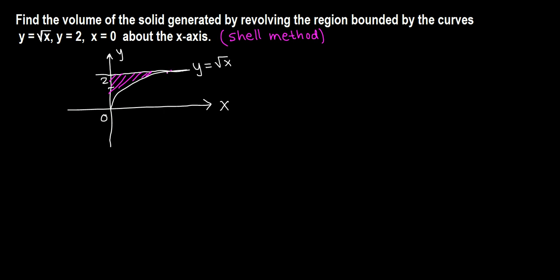By the way, the square root of what number is 2? That's 4, right? The square root of 4 is 2, so this point of intersection is in fact 4.